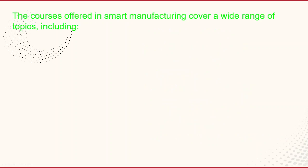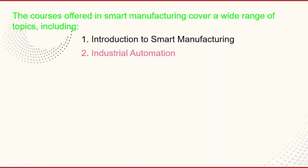The courses offered in smart manufacturing cover a wide range of topics. The first is an introduction to smart manufacturing, which provides an overview of smart manufacturing and its applications, including Industry 4.0, digital manufacturing, and cyber-physical systems. The next course is industrial automation, which covers the principles of automation including control systems, sensors and actuators, and programming languages such as ladder logic and Python.